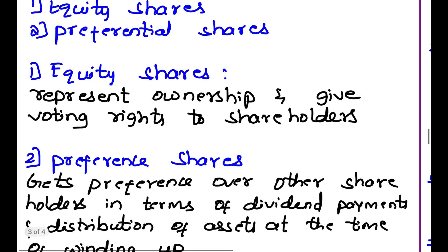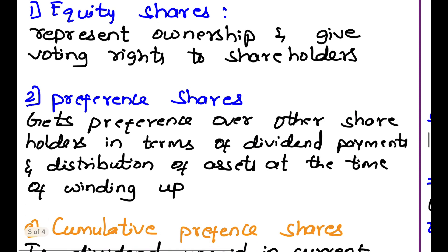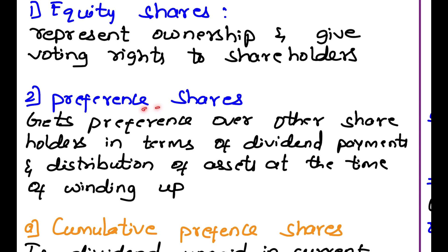Preferential shareholders have their own benefits. They get preference over other shareholders in terms of dividend payments and distribution of assets at the time of winding up. While paying dividends, preference shareholders are given first priority. When the company is winding up and distributing assets, first preference is given to preference shareholders. But they do not have any voting rights — only equity shareholders have voting rights.